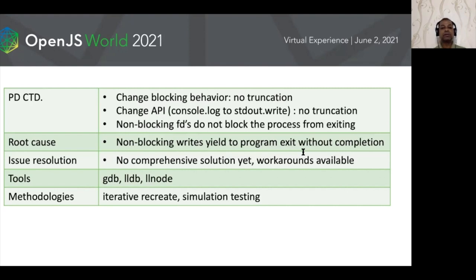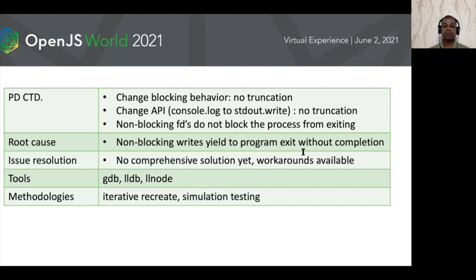The solution is to avoid console.log, which is asynchronous, and instead use process.stdout.write, which is a blocking API — it holds the process in a blocking state until all data is written. That is the workaround. Fundamentally, for console.log's async nature at exit, there is no comprehensive design-level fix as of now, and a number of issues are open. A proper fix is unlikely in the near future, but a stable workaround exists.